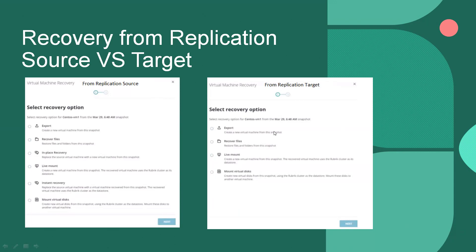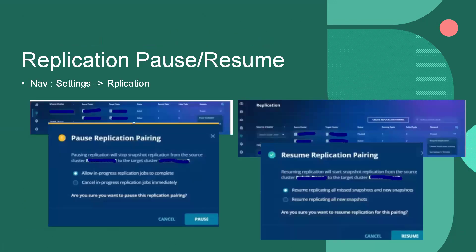We can pause and resume replications, for example during maintenance activities. To pause, navigate to Settings > Replication, where we can see the replication pairing created in previous steps. There are two ways to pause: allow in-progress replication jobs to complete, or cancel in-progress replication jobs immediately and pause. We can select as per requirement.